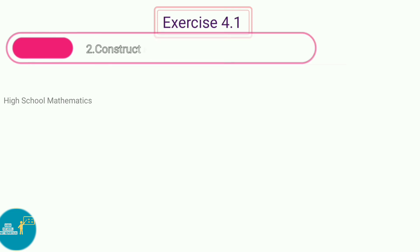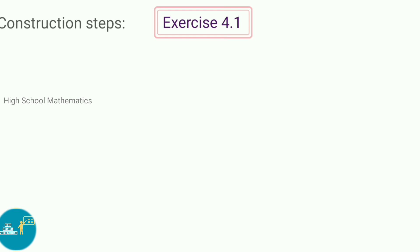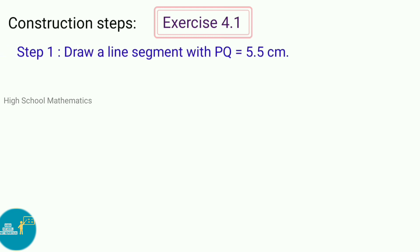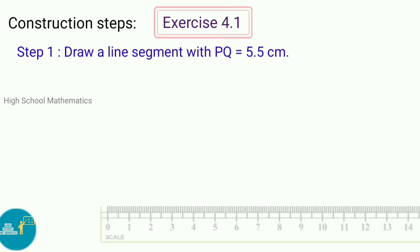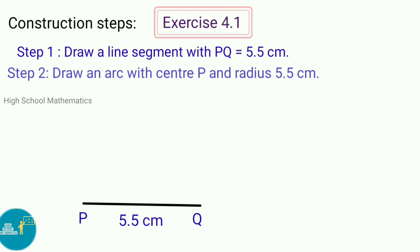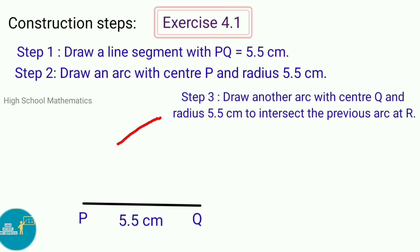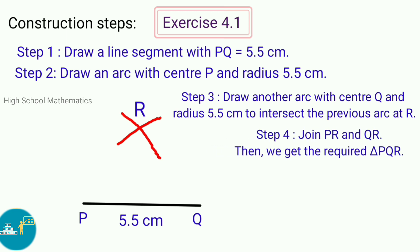Second sum: Construct an equilateral triangle PQR with side PQ equal to 5.5 cm. Construction steps — Step 1: Draw a line segment with PQ equal to 5.5 cm. Step 2: Draw an arc with center P and radius 5.5 cm. Step 3: Draw another arc with center Q and radius 5.5 cm to intersect the previous arc at R. Step 4: Join PR and QR. Then we get the required triangle PQR.